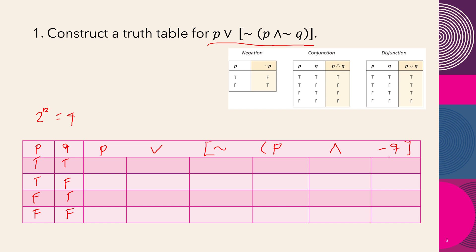First, we find the negation of q. Since q is true, false, true, false — the negation of q is: false, true, false, true.